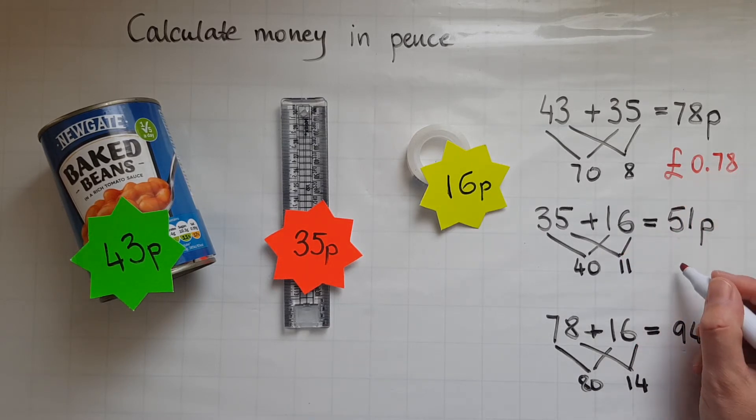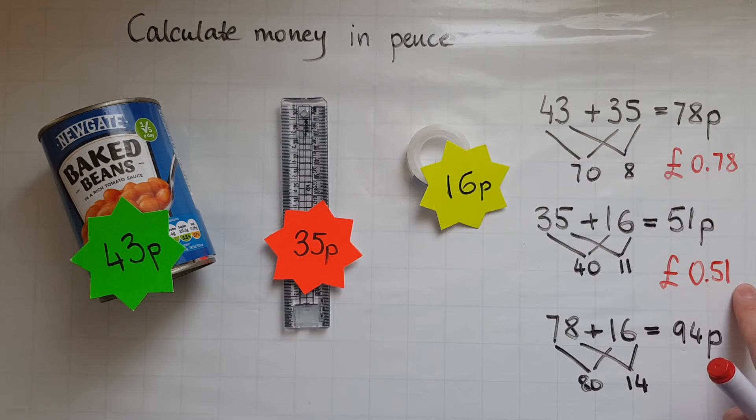51 would be written as £0.51. I don't need a pence sign at the end now because I've got a pound sign in front, which tells us that there are no pound coins. And that decimal point separates the pounds from the pennies. So we know that the rest is pennies. So that is 51 pence.